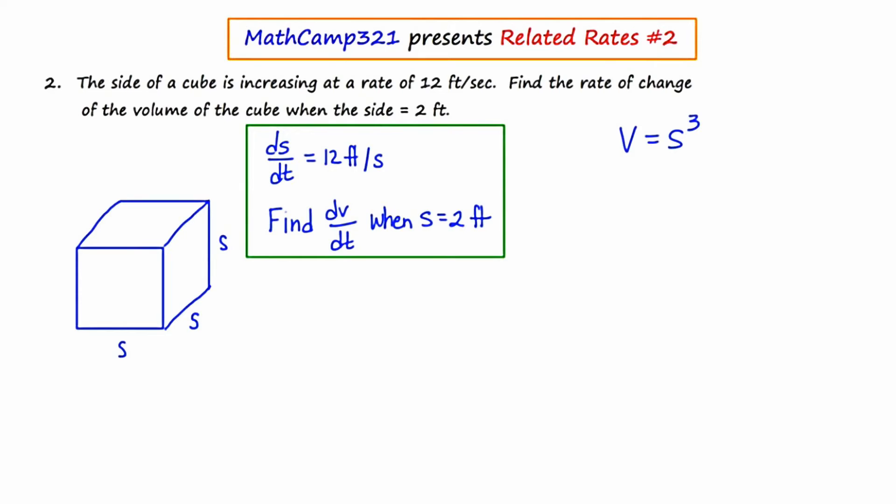Now there are two variables in this formula. One is for volume and one is for side. And what I want to ask myself before I start is, over time are these quantities changing? Over time, is the volume of this cube changing? And the answer is yes. And we know that because the side over time is getting larger. So therefore, the volume will also be getting larger.